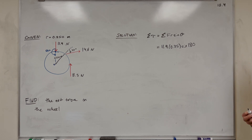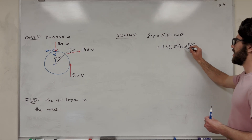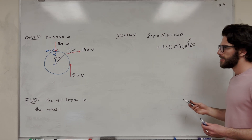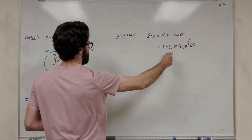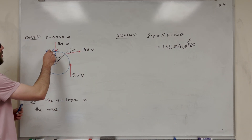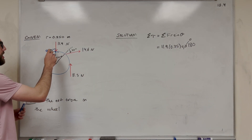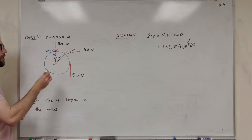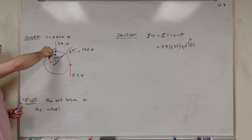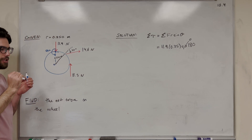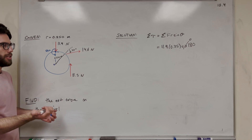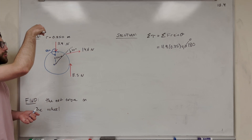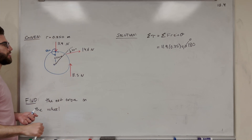Now, if you've taken geometry and stuff, you know that sine of 180 is equal to 0. So what we're saying here is that all of this torque is equal to 0 — the torque due to this force is equal to 0. And that makes sense, right? We're pushing directly into the origin. If you push directly into the center of mass of something, it's not going to rotate. So similarly, we're not applying any torque because we're pushing 180 degrees directly inward.